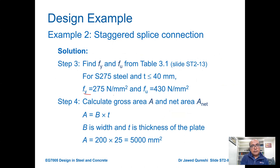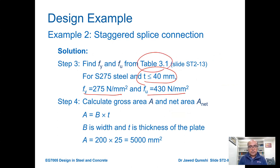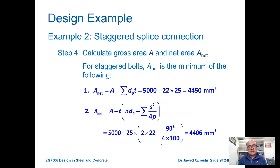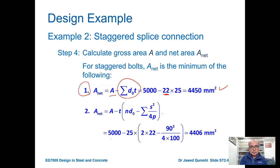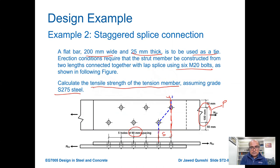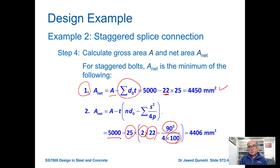First, find FY = 275 and FU = 430 from table 3.1 for thickness less than 40 mm. Gross area = 200 × 25 = 5000 mm². For A-net with the red failure section (one bolt): summation of D-naught × t = 22 × 25, giving A-net = 4594 mm². For the blue staggered section (two bolts): A = 5000, N = 2, D-naught = 22, S = 90, P = 100, giving A-net = 4406 mm². We choose the smaller value: 4406 mm².